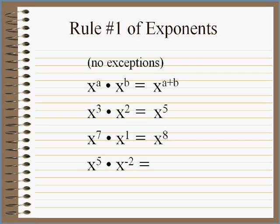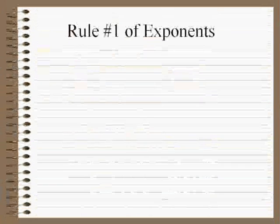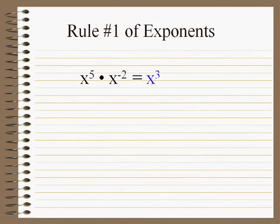What will happen with x to the fifth times x to the negative two, assuming it has to follow all the rules of exponents? It's got to be x to the third, because five plus negative two is three. So that's got to work if it's going to follow all the rules.